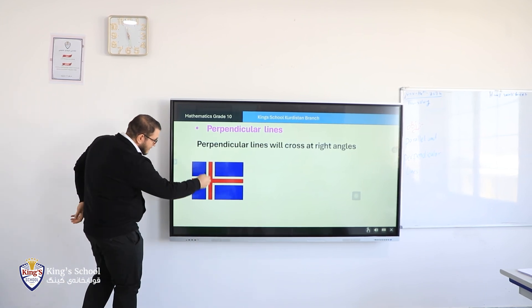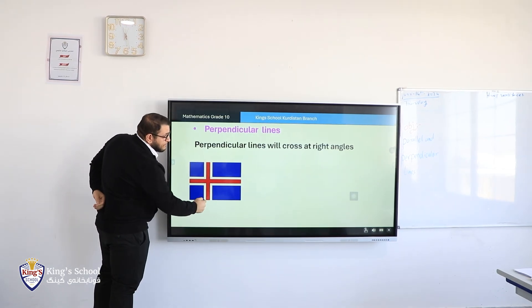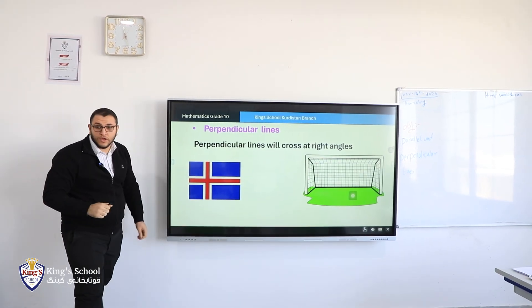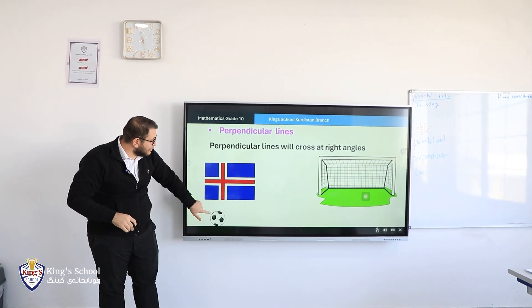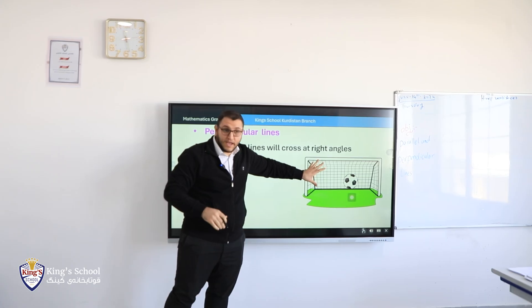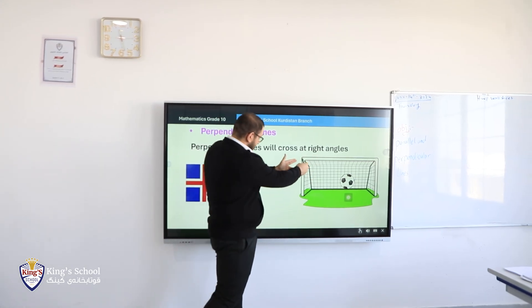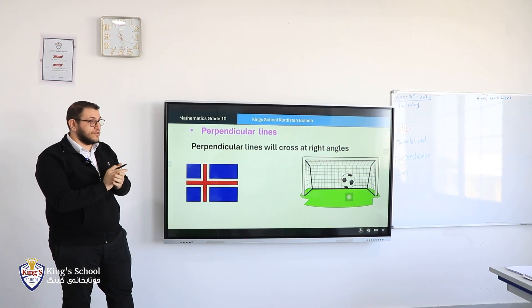Note that this line with this line, they intersect exactly in 90 degrees, right? We have a goal. We all like to play football, right? So when we score a goal, exactly, the corners of the goal is 90 degrees. Okay. They are what? Perpendicular.